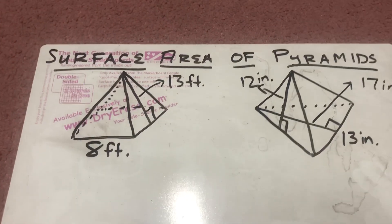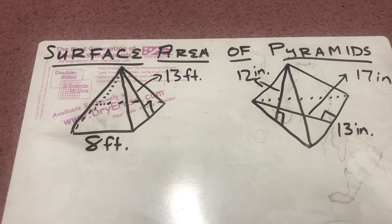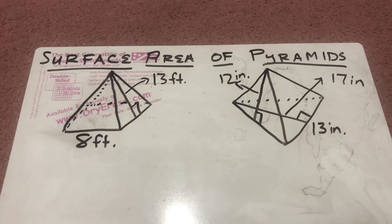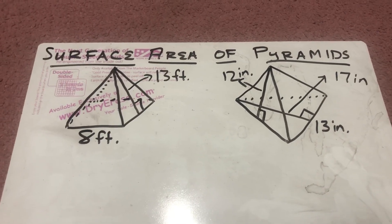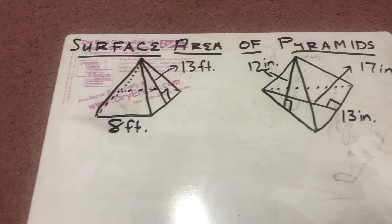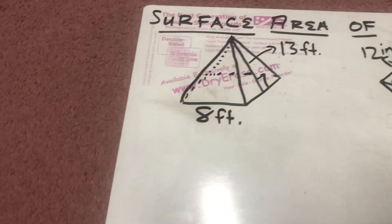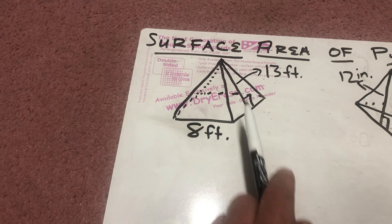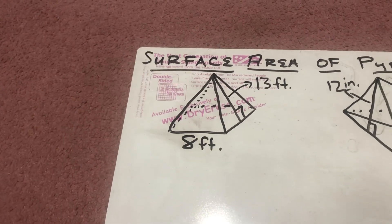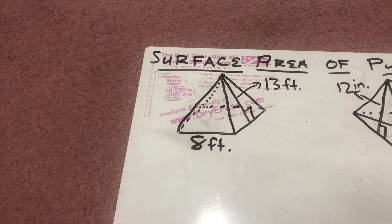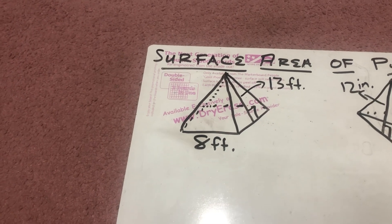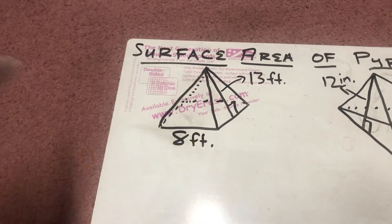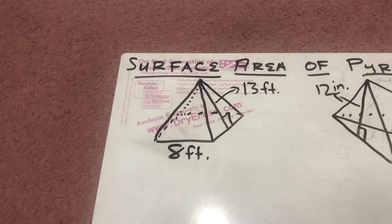All right, 7th graders, we are continuing on here in this idea of surface area of pyramids. Here we have pyramids, and basically a pyramid has a base and then triangles coming up from it. Now today we are focusing on regular pyramids, which means that all the sides of the base are the same size.